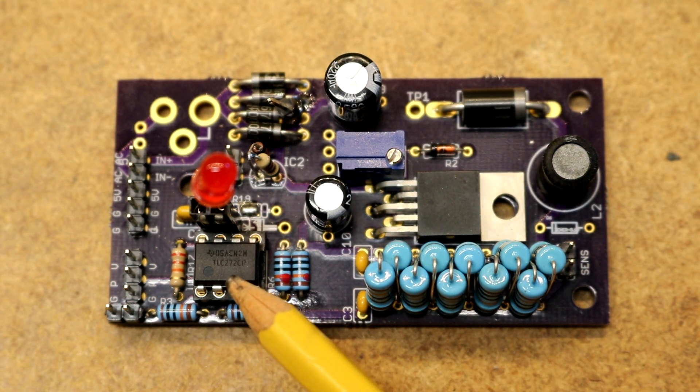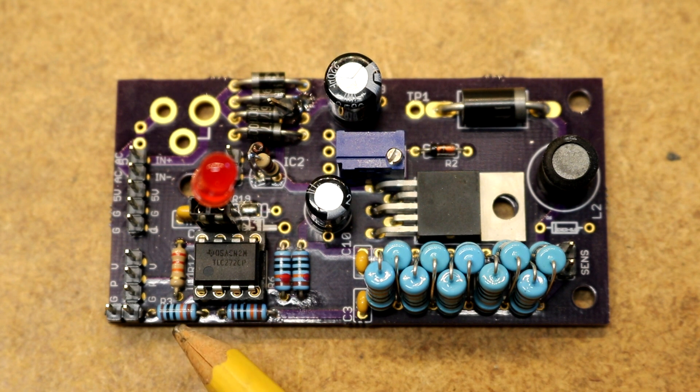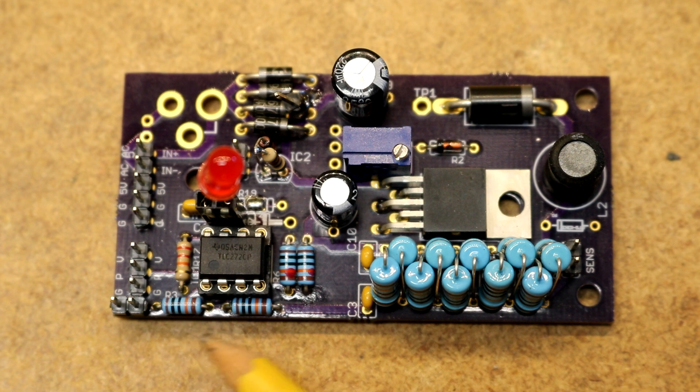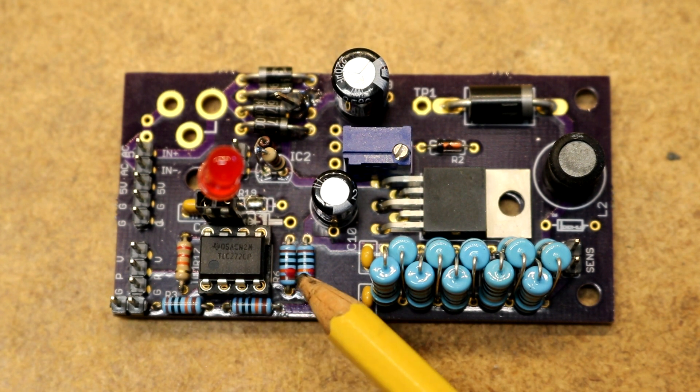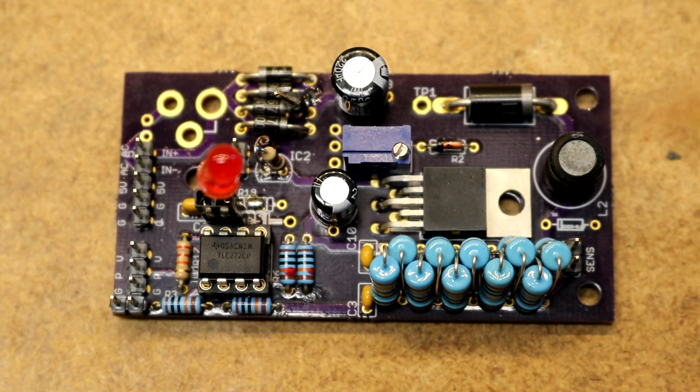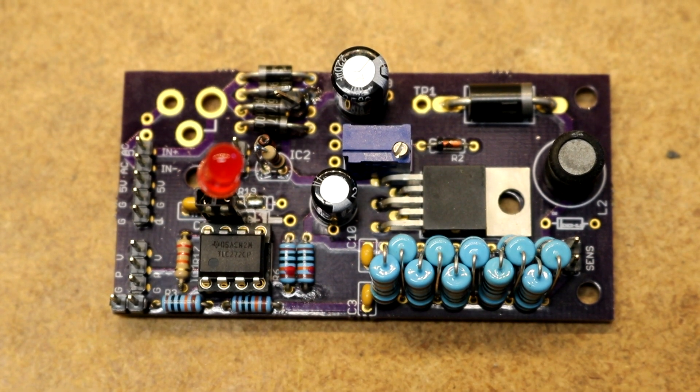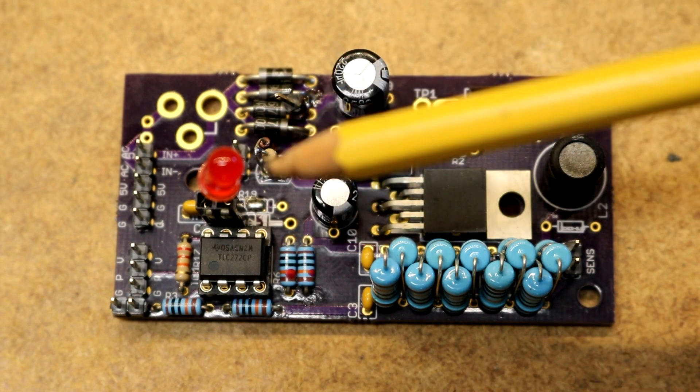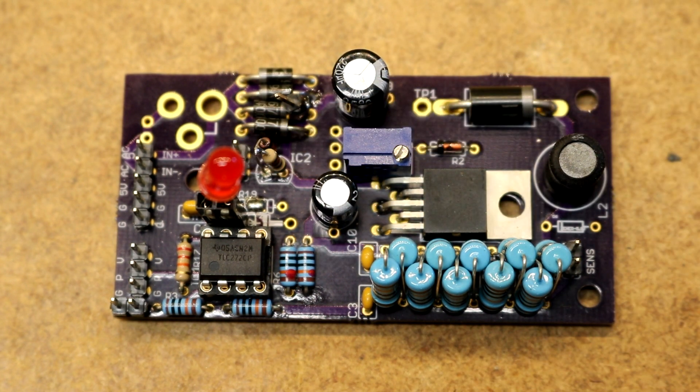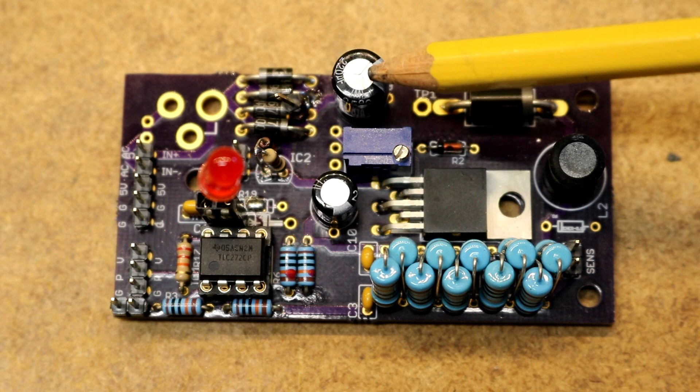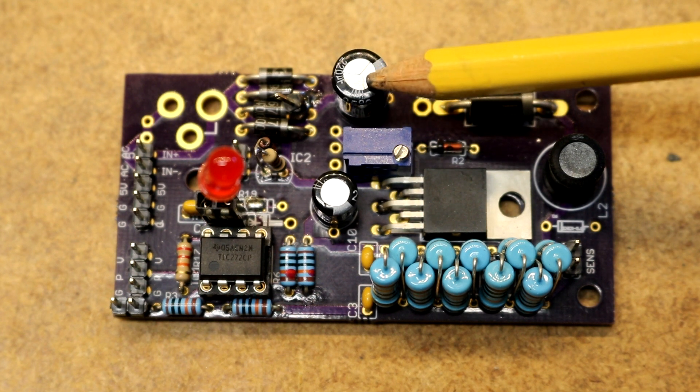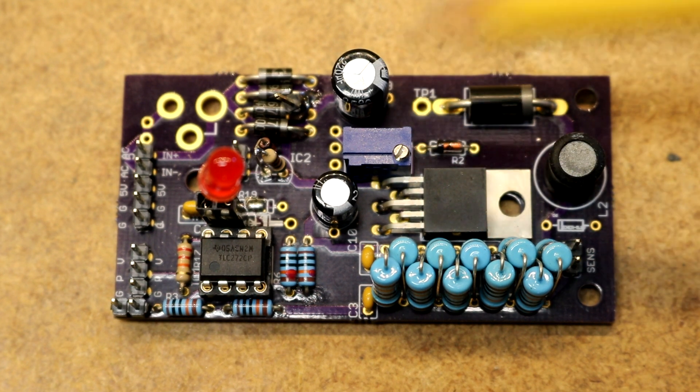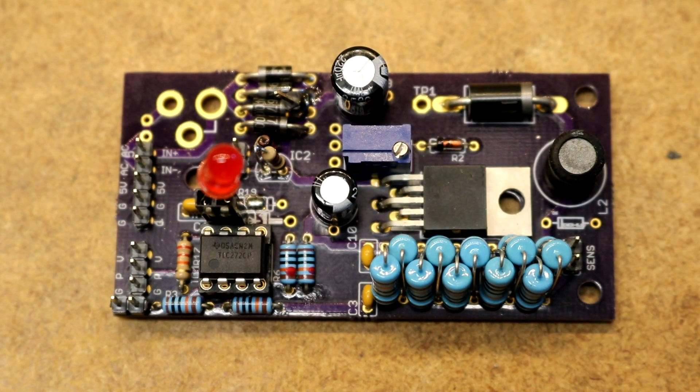Over here is the TLC 272 op amp. It has got 1, 2, 3, 4, 100k resistors. You will note that those are precision resistors. It is very important if you use just normal tolerance crappy ones then you will get weird outputs. Here is our LED. We have got a couple of capacitors. This is the input filtering capacitor. It is actually too small. I have some bigger ones on order. This is the output capacitor.